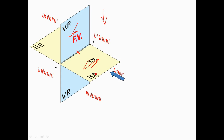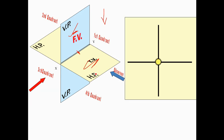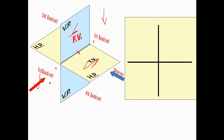The front view is projected onto the vertical plane, and the top view is projected onto the horizontal plane. Looking at the object from the direction of the red arrow mark, we can observe the horizontal line and vertical line used to obtain the views.